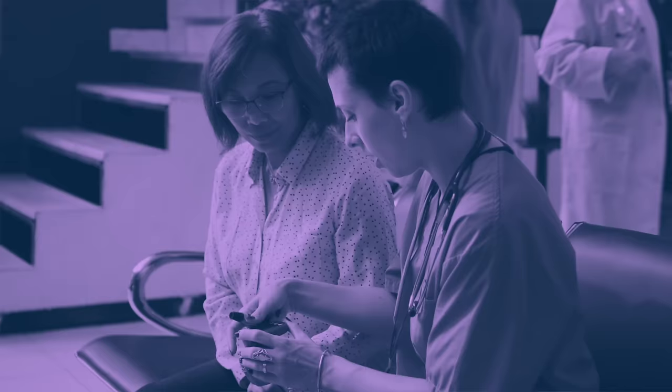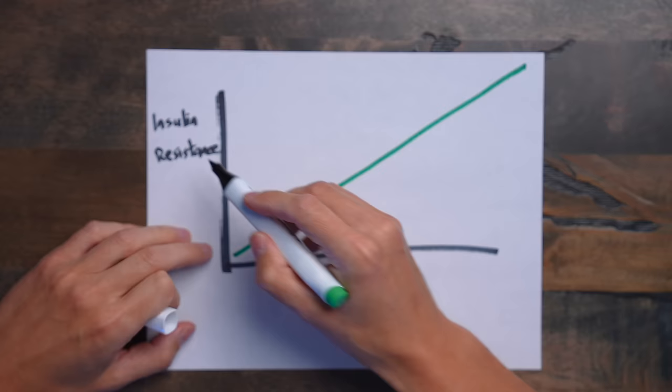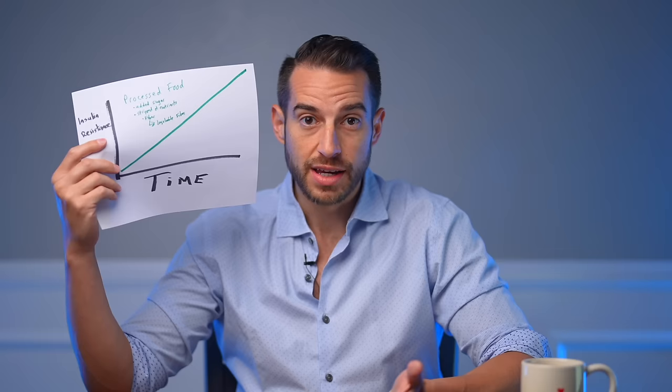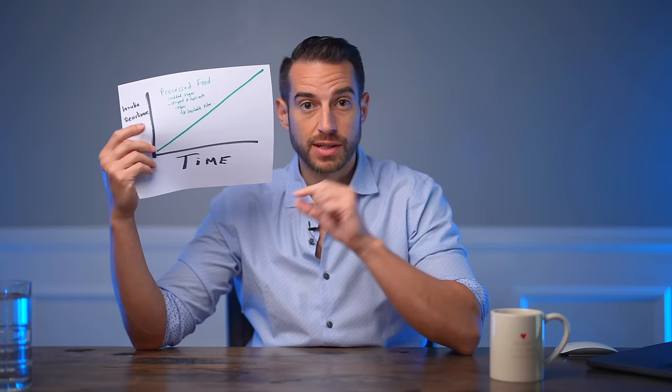Yes, insulin resistance leads to higher blood pressure, also higher triglycerides, higher cholesterol levels, and of course pre-diabetes and then type 2 diabetes. Insulin resistance is a result of eating processed food. It's really this simple: processed food has lots of added sugar, it's deprived of its fiber, especially the insoluble fiber, and this leads to insulin resistance over time.